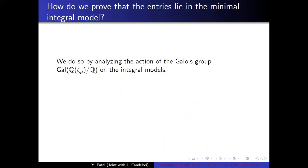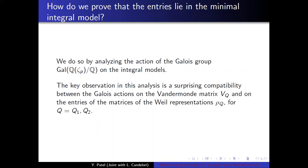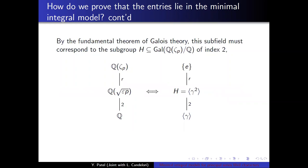So how do we prove that the entries lie in the minimal integral model? Well, we do so by analyzing the action of the Galois group over the integral models. The key observation in this analysis is the surprising compatibility between the Galois actions on the Vandermonde matrix VQ and on the entries of the matrices of the Weil representations, rho Q, for Q equals 1, 2. Q1, Q2, both quadratic forms.